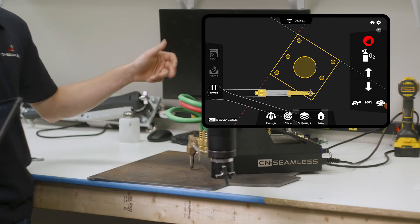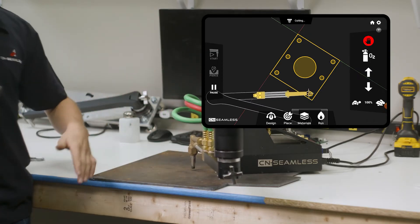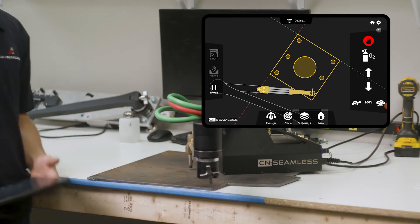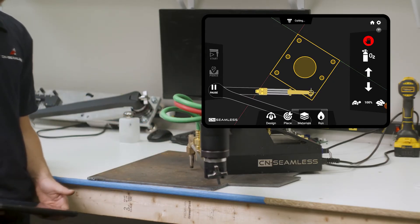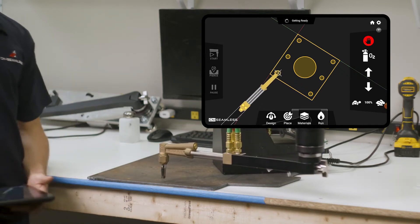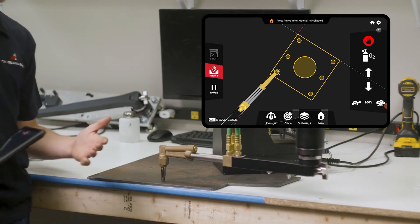That's going to turn on that cutting jet, lift up, pierce, move back down, and start moving around. So you can see it's cutting that circle right there. Does its lead out, it's going to lift up, go to the next shape, lower back down to where you had it before.